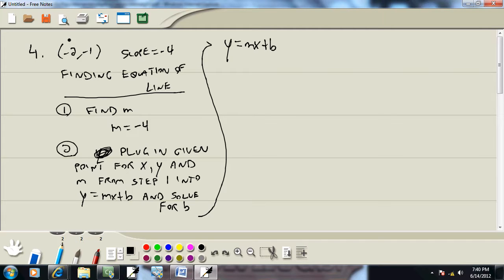Now, they give us a point. So this would be your x and this would be your y. So plug negative 1 in for y. m from step 1 was negative 4. And x is negative 2. And then plus b. And then we want to solve for b.